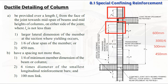The spacing of special confining reinforcement shall not exceed: one-fourth of the minimum dimension of the beam or column, six times the diameter of the smallest longitudinal bar, or 100 mm. For a 300 mm column width: 300/4 = 75 mm. For 12 mm smallest bars: 6 × 12 = 72 mm. All values are close to 100 mm, so the maximum spacing is 100 mm — the same as the spacing required for bar splicing.